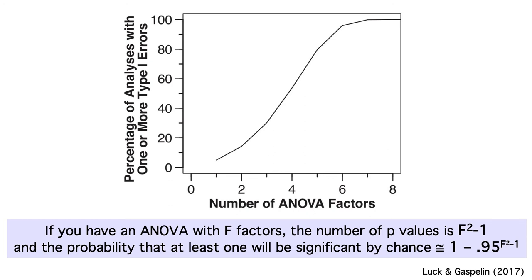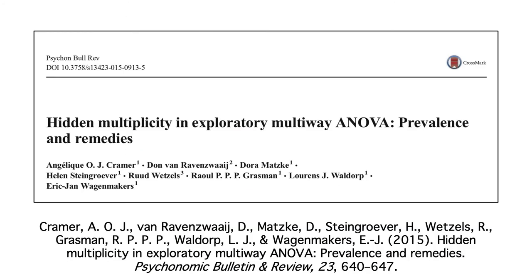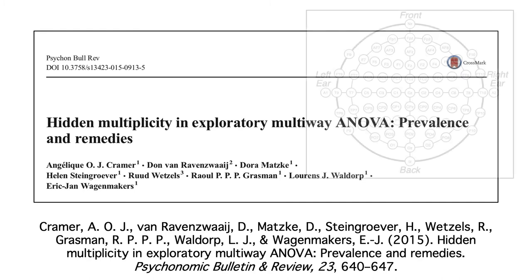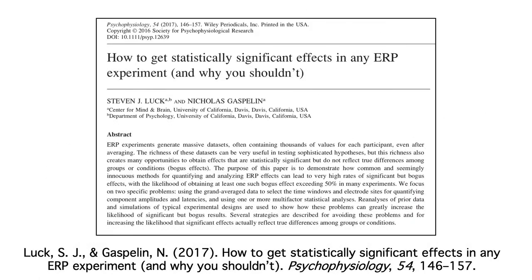The problem of inflated false positive rates in multi-factor ANOVAs isn't specific to ERPs — here's a paper that focuses on the same issue in behavioral research. However, ERP papers often have extra factors you wouldn't have in a behavioral study, like an anterior-to-posterior electrode position factor and a left-versus-right hemisphere factor, making the problem more common in ERP studies. There are straightforward ways to decrease the number of ANOVA factors in ERP studies to avoid this problem, discussed in this paper. So remember, be cautious when you see ERP analyses with a large number of factors, and be concerned if they don't justify their choice of time windows and electrode sites.